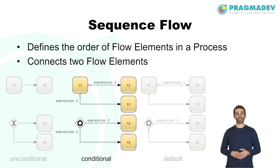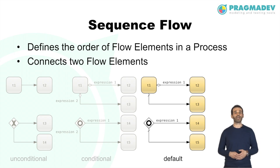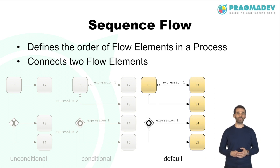The source of a conditional sequence flow can be a gateway or an activity. When the source is an activity, the sequence flow is drawn with a diamond marker. A sequence flow can also be defined as default, indicated by a slash marker. The default sequence flow is taken only if all other outgoing sequence flows are not valid — that is, their condition expressions evaluate to false. If a default flow is present, all other flows must be conditional; however, conditional flows can be mixed with unconditional flows.